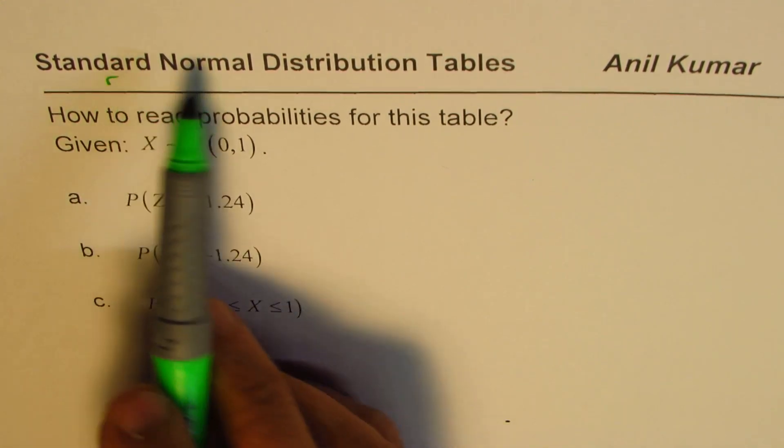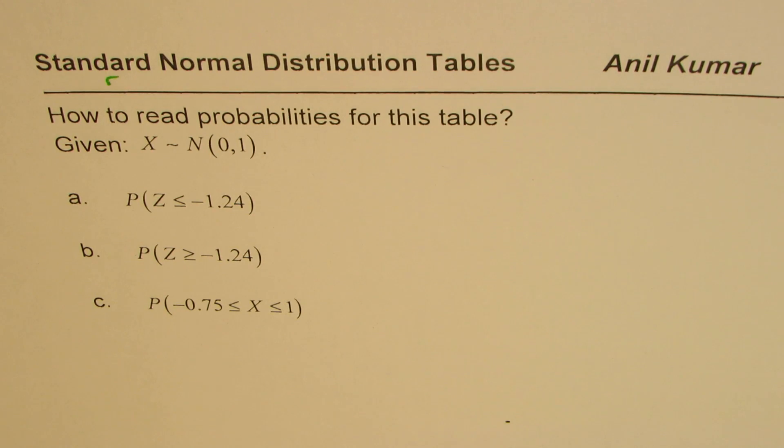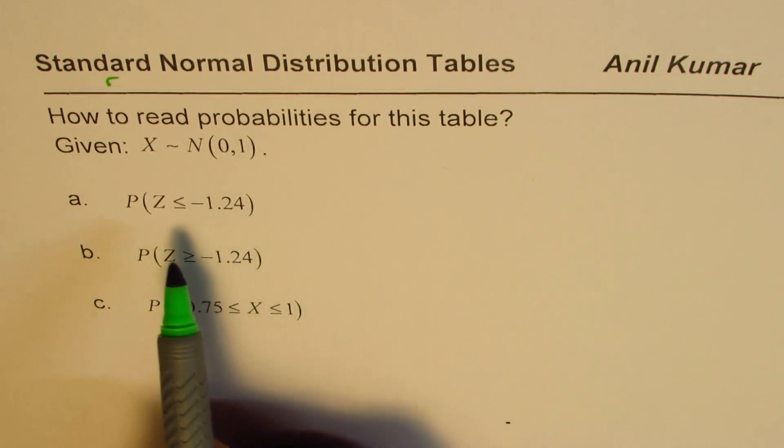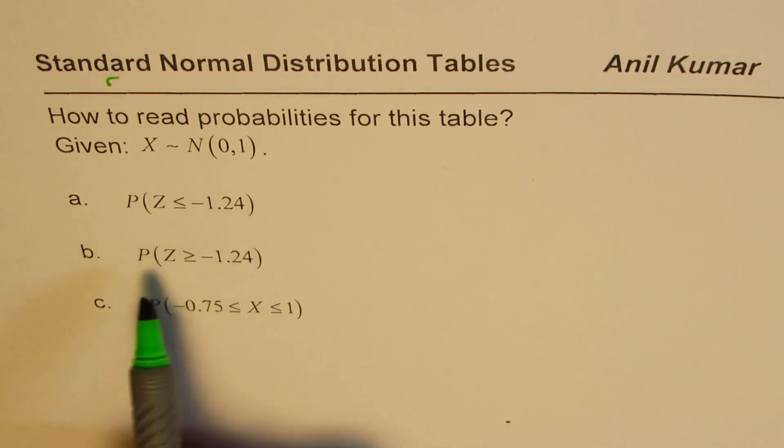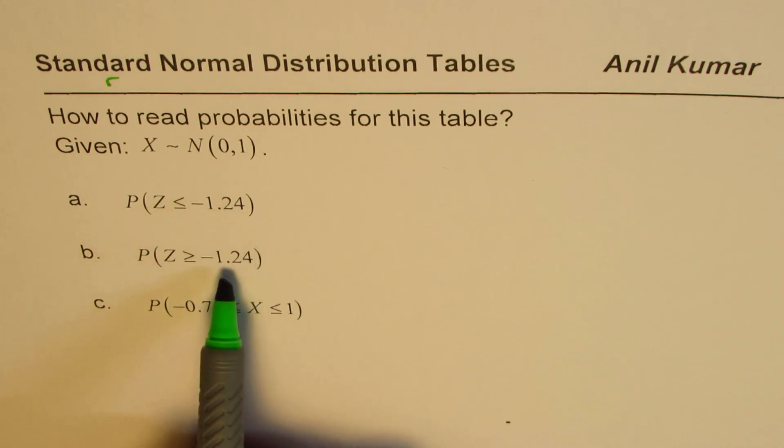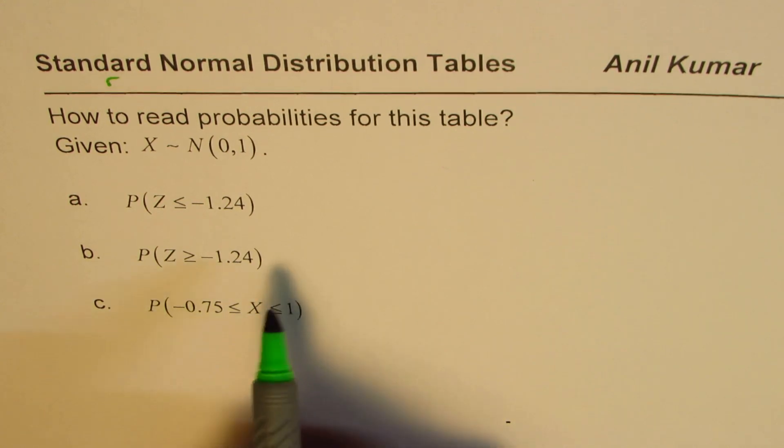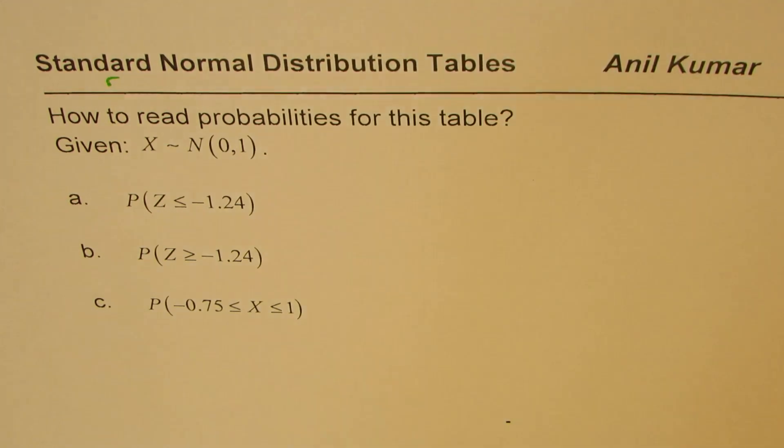So that is your standard normal distribution. We don't have to normalize, it's already a normalized distribution. Now, in this particular case, we need to find what is the probability when the z-score is less than or equal to minus 1.24. What is the probability when z is greater than or equal to minus 1.24? And what is the probability when the value of z is between minus 0.75 and 1?